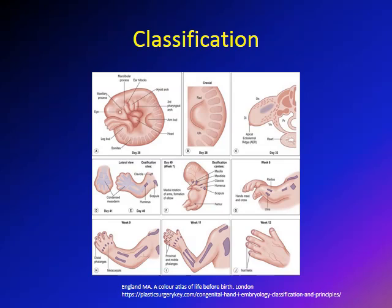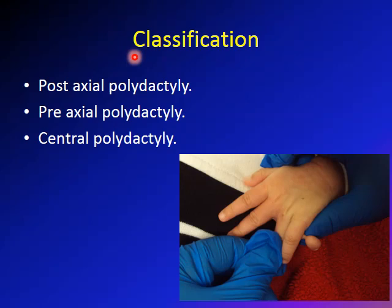Before we start the classification, I'd like to explain what is meant by pre-axial and post-axial and why this name is given. It is related to upper extremity development during fetal life. When the upper extremity buds start to develop, the radius and the thumb are more cranial and the ulna and the small digits are more caudal. So a deformity in that area is called pre-axial, and a deformity on the other side is called post-axial.